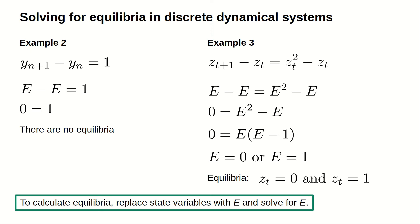In summary, to calculate the equilibria of a discrete dynamical system, replace all occurrences of the state variable with the variable E, then solve the resulting equation for E.